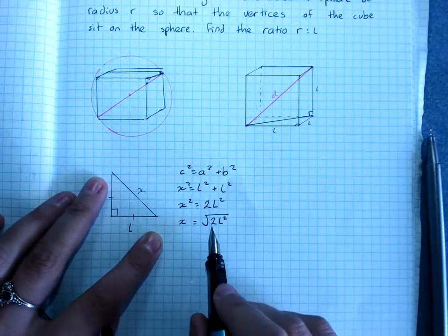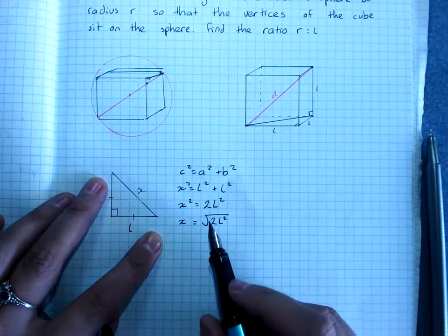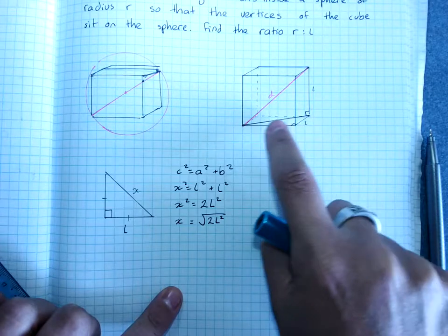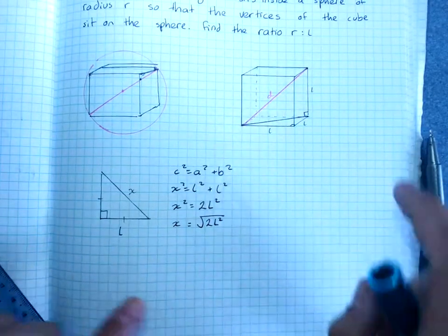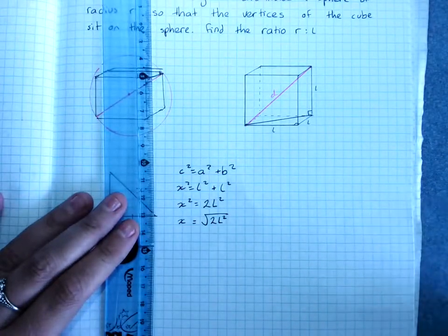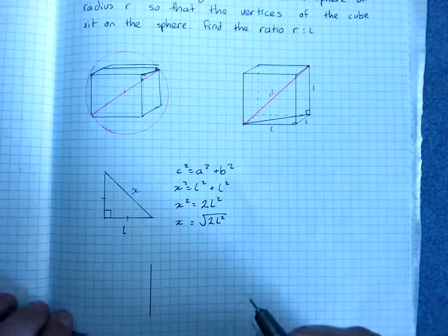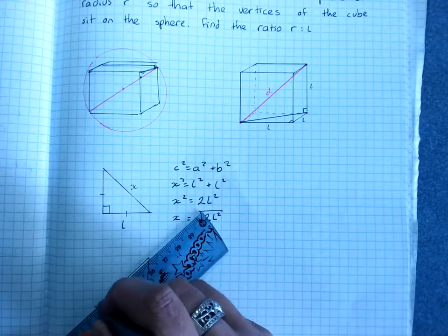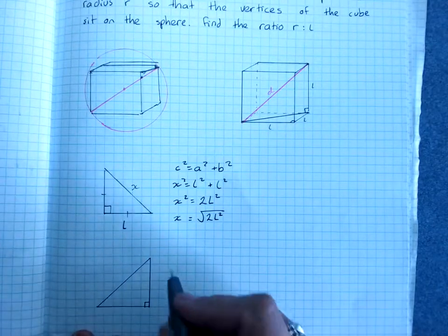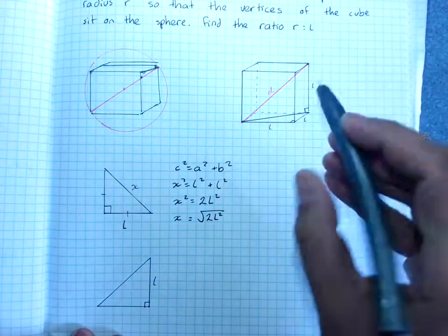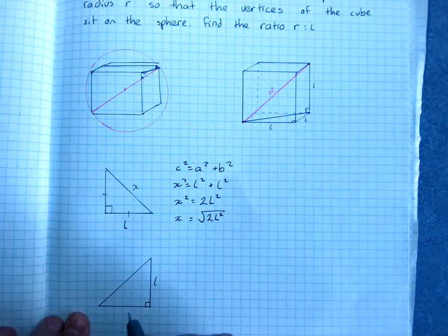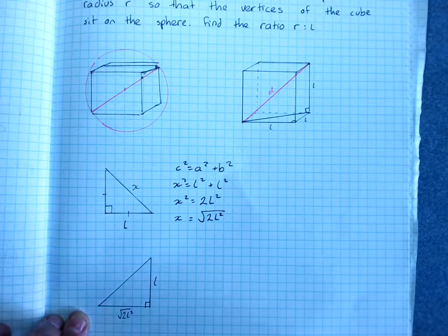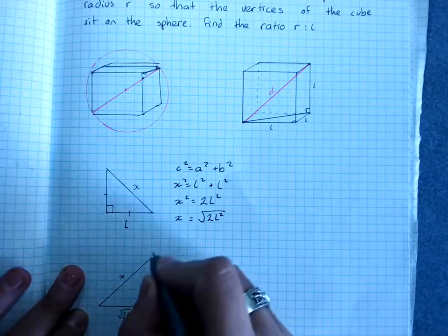That will mean that X is the square root of 2L squared. Now I could simplify this, but I'm not going to. Now I've got that dimension along there, so I can draw this triangle. So I know I've got L up the side, and I just found this bottom dimension. It's the square root of 2L squared.